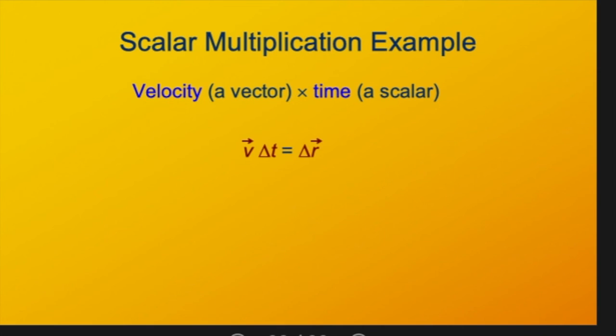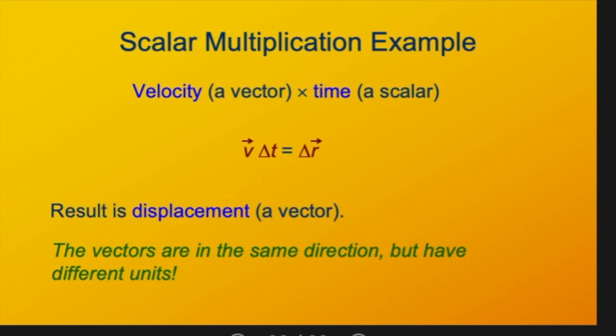An example of when that comes up in physics, with the kind of systems that we've looked at already, is if you multiply velocity times time. Velocity is a vector, time is a scalar. Some velocity times a change in time gives you a change in position. These are different kinds of quantities. However, this change in position, delta R, is in the same direction as V. So the velocity gives you the direction of the position change. The vectors are in the same direction, but they have different units here.